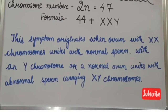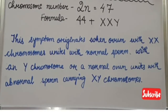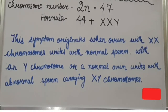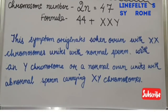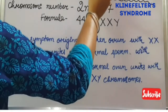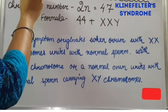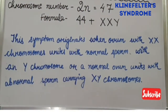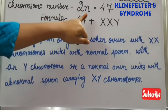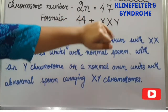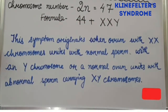Hello everyone, this is Priyanka here. Welcome to Simply Biology. Today we are going to start another syndrome — that is Klinefelter syndrome. The chromosome number in Klinefelter syndrome is 2n equal to 47.